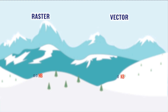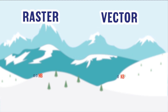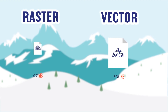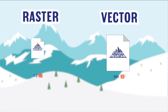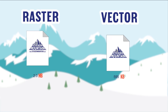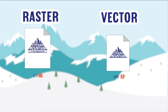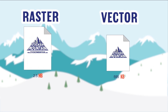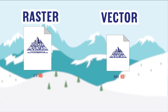They also differ in file size. Because raster images are created using pixels, it takes up a lot more space, thus a bigger file size, because it has to store all the information of all those pixels. Vectors tend to be a lot smaller, since all the information they are storing is mathematical equations.